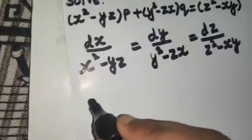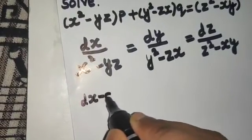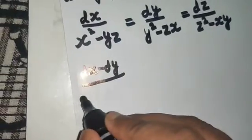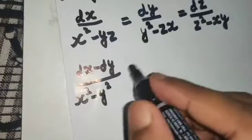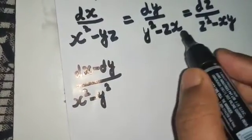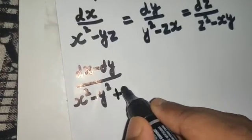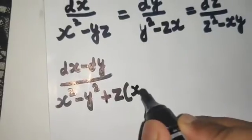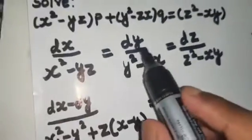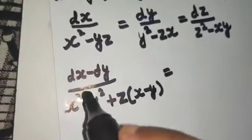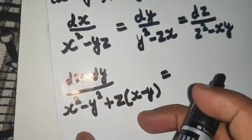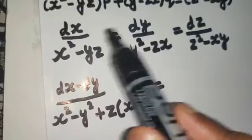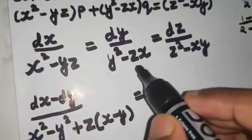Applying this idea, we write (dx − dy) divided by (x² − yz − y² + zx). Simplifying: x² − y² + z(x − y) = (x − y)(x + y) + z(x − y) = (x − y)(x + y + z). So the first combined fraction becomes (dx − dy) divided by (x − y)(x + y + z).